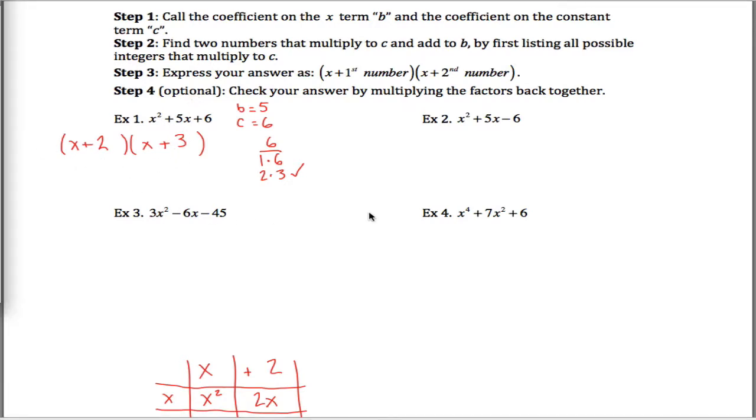So I'll do a few more, we can kind of work through these a little bit faster. Same idea here, I want two numbers that multiply to negative 6 this time and add to 5. What I would do is list all the numbers that multiply to 6, which you might be like wait but you don't want 6, your c is not equal to 6, your c is equal to negative 6.